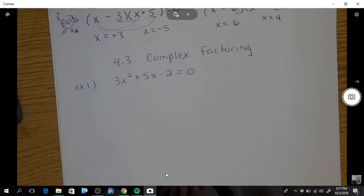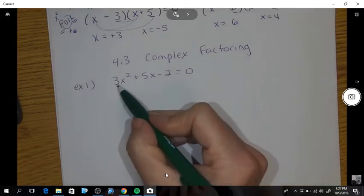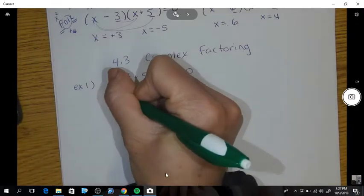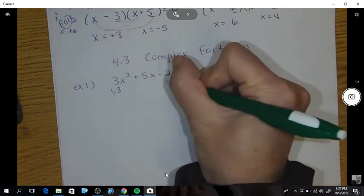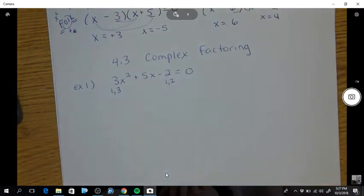Okay, so for this example, I am noticing that 3 has factors of 1 and 3, and 2 has factors of 1 and 2. So because this situation does not have very many options, I'm going to use the guess and check method.